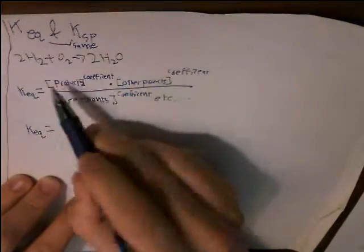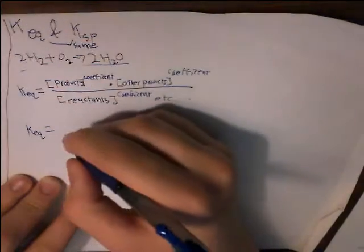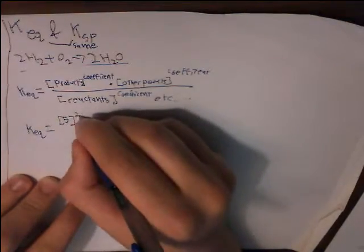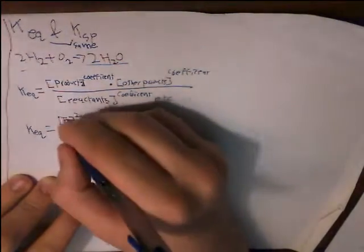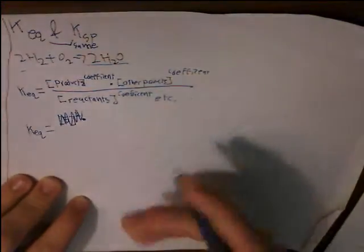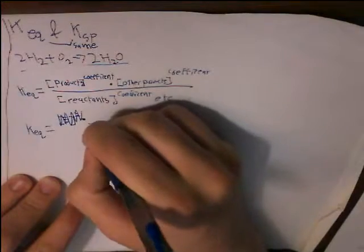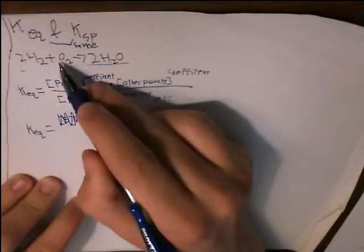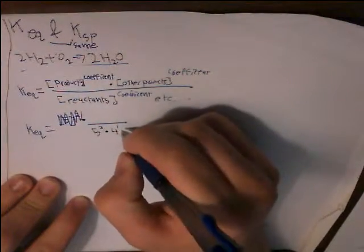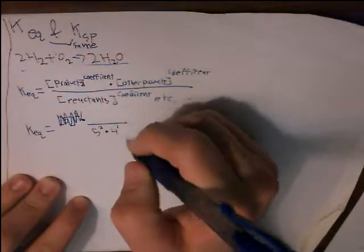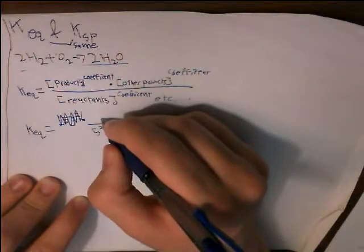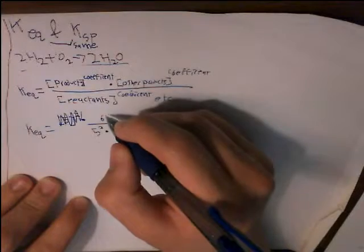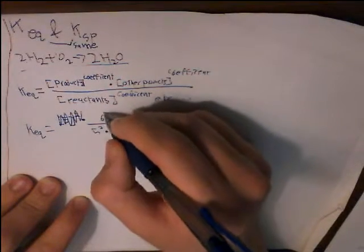KEQ, let's say that we're going to use our favorite equation. Let's say you have a molarity of 5 for H2, let's start this over, times a molarity of 4 for O2. O2 has a coefficient of 1, so it technically has a power of 1. And let's say H2O has a molarity of 6, just a molarity of 6. And that would be squared.